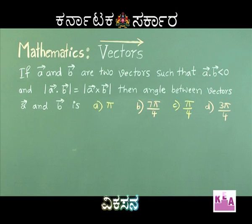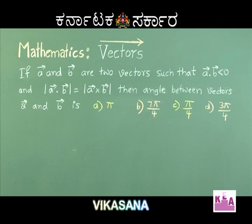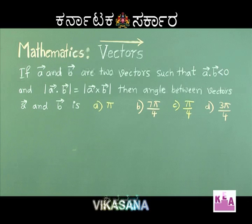Next question: if vector A and vector B are two vectors such that vector A dot vector B is less than 0, and the modulus of vector A dot vector B is equal to the magnitude of vector A cross vector B, then the angle between vectors A and B is: option A pi, option B 7π/4, option C π/4, option D 3π/4.